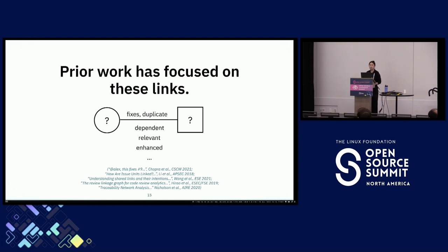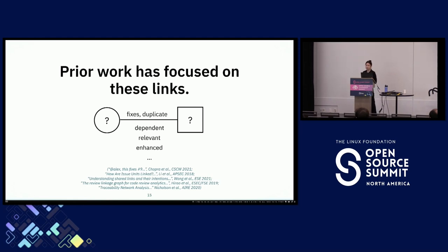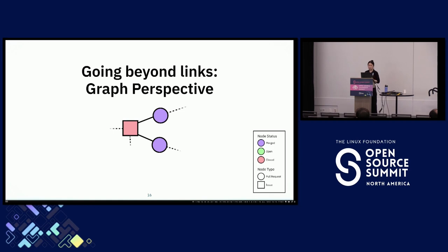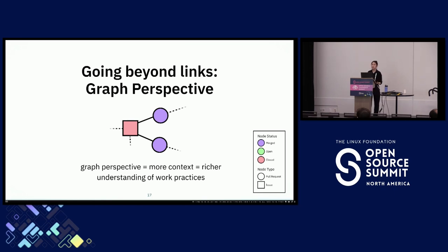Prior software engineering research has focused extensively on these individual links. About 85% of the links on GitHub don't actually have one of these explicit link types—they're just blank, according to research done by Chopra et al. Researchers have primarily been trying to classify these blank links into richer categories than just fixes or duplicates, including things like dependent, relevant, or enhanced. Some work has also been done to do this classification automatically with NLP. But we wanted to zoom out of this very focused research on individual links and take a look at multiple issues and PRs and the links between them all. Our research is the first to visualize multi-node clusters of issues and PRs as a graph. This graph perspective grants us more context and a richer understanding of the work practices followed by a project.